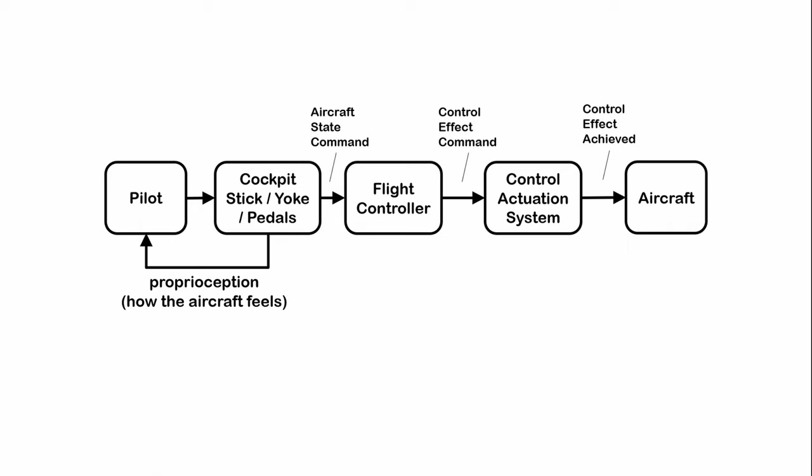The original Apollo inertial measurement unit was used to avoid unnecessary modification of the Apollo computer. This IMU measured acceleration and attitude and was the raw source of aircraft state feedback data for flight control.